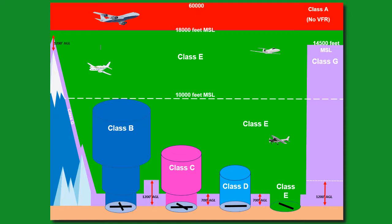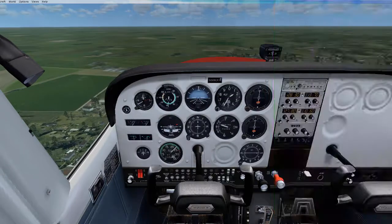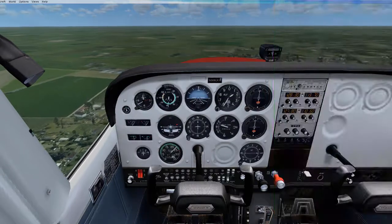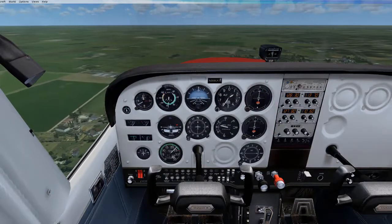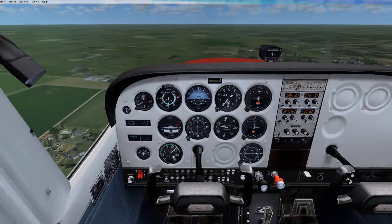Most of the time, pilots will fly above Class G instead of being so close to the ground where obstacles are and where pilots have less altitude to work with to land the plane if an issue occurs. Since fewer airplanes fly in Class G airspace, the minimums are less restrictive.